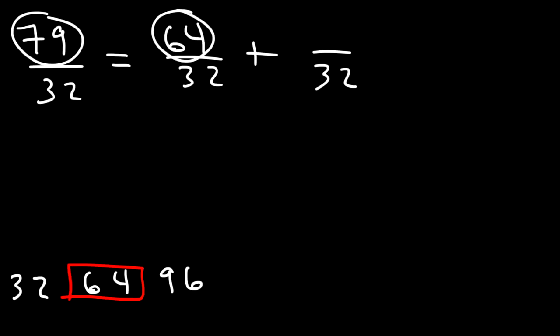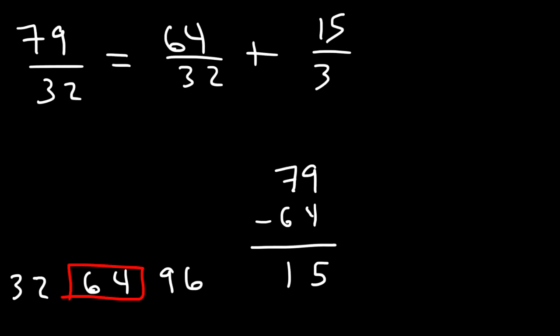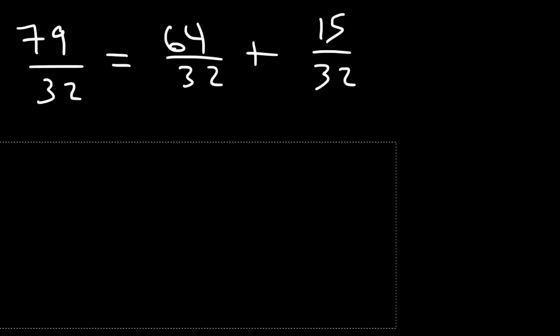If we subtract them, it's going to be 9 minus 4 is 5, 7 minus 6 is 1, so that's going to be 15. So the missing fraction is 15 over 32.